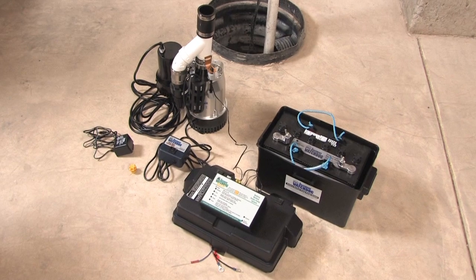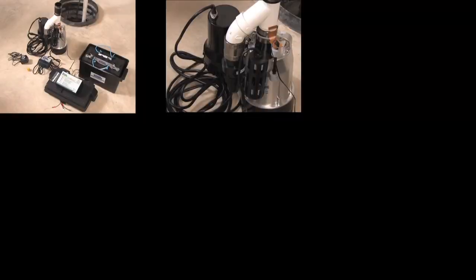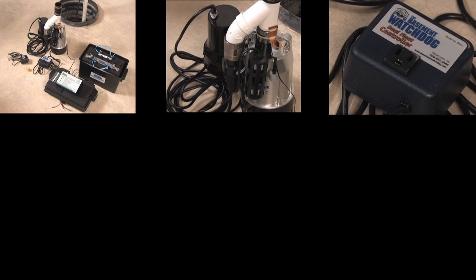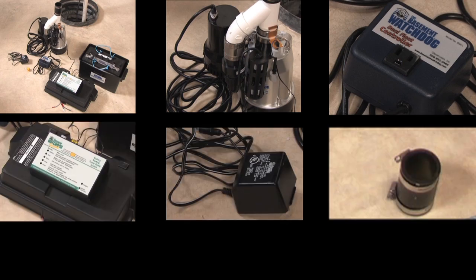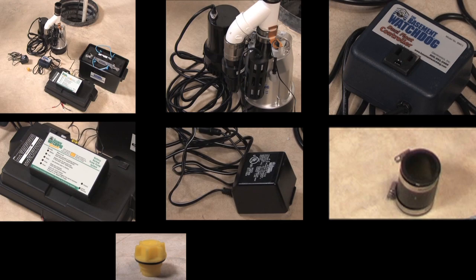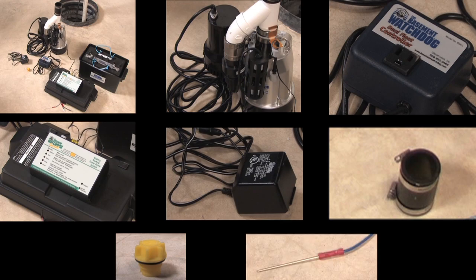Lay out the parts included in the Basement Watchdog combination system: the pump assembly, the AC pump controller, the backup pump controller, the charger, a rubber union, and the yellow battery cap. That cap has a hole to accommodate the battery fluid sensor.